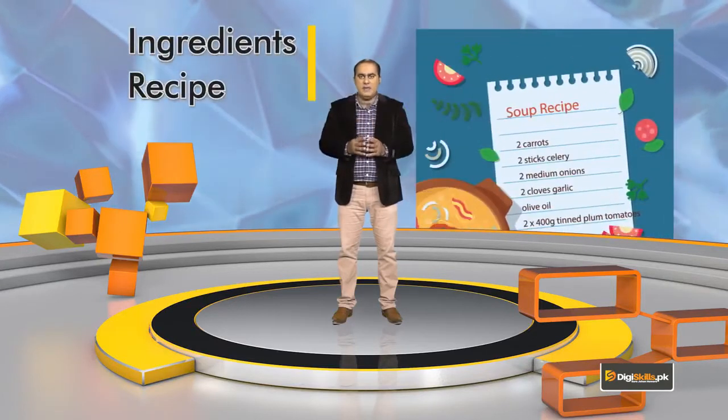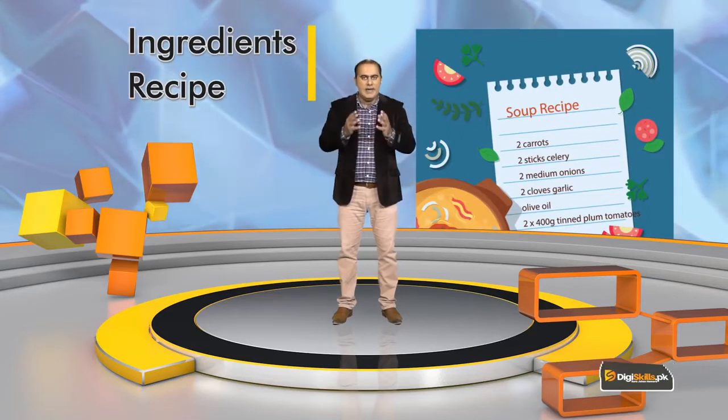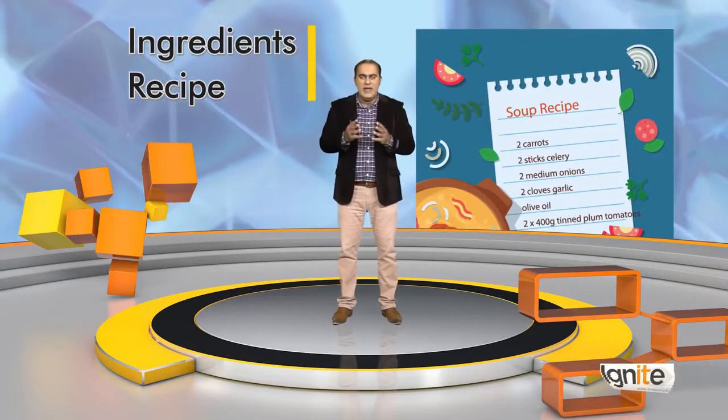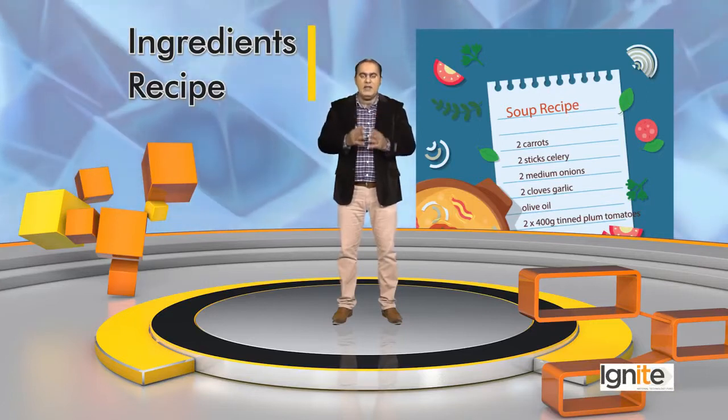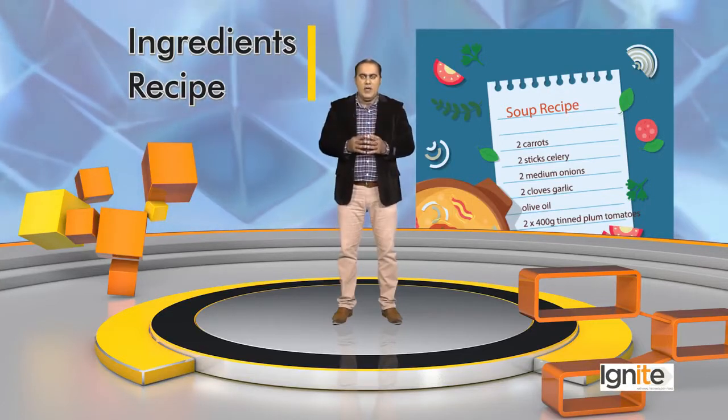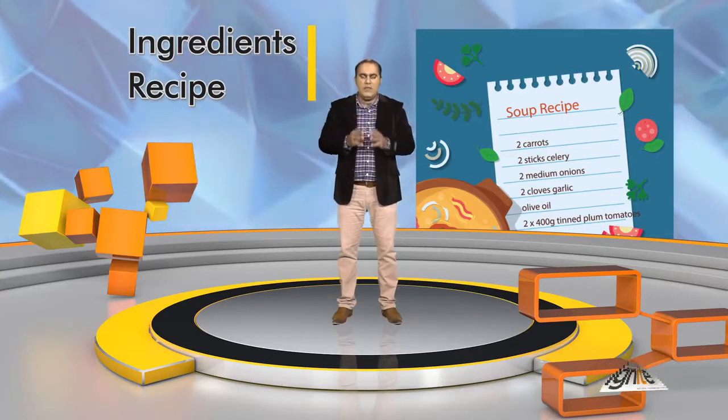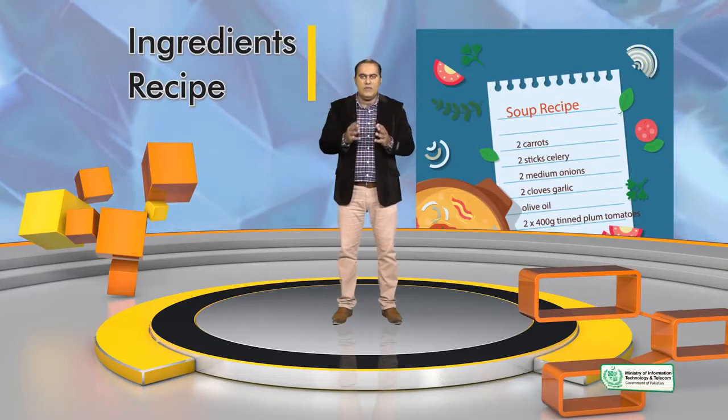Let's look at the elements of design and principles of design with an example. First, let's start with the analogy of food and a dish. You have to choose two products: number one, ingredients, and number two, the recipe. The ingredients will provide you with the material from which the dish will be made, and the recipe will tell you how the dish is made. So, if we talk about design, the elements of design are the ingredients, and the principles of design are the recipe.